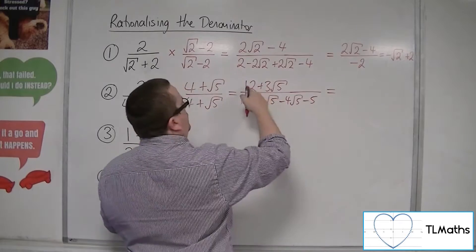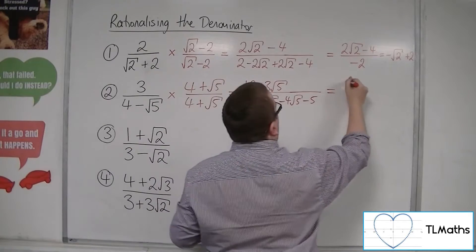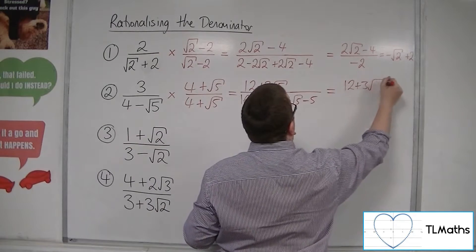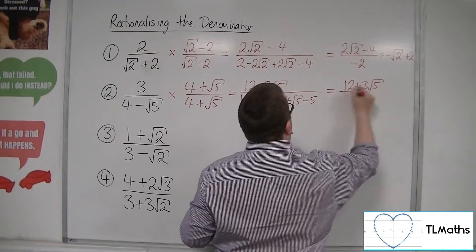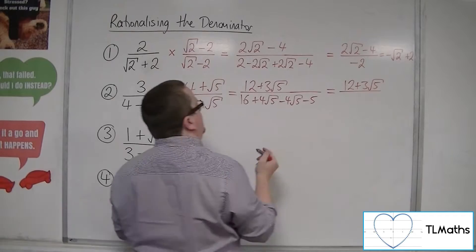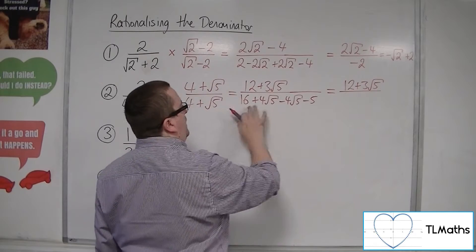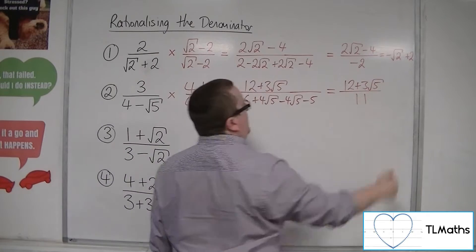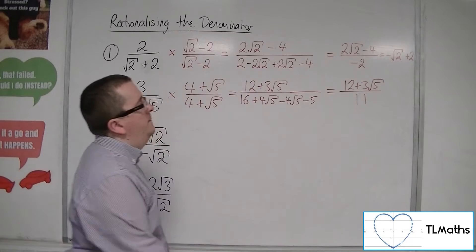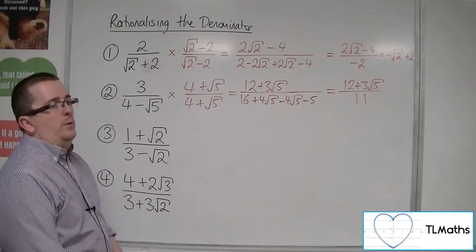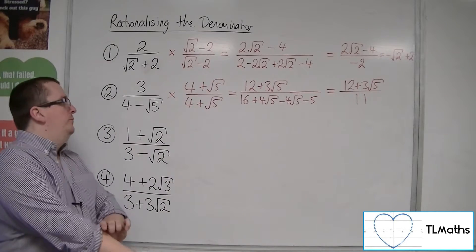And minus root 5 times root 5 is minus 5. So we've got 12 plus 3 root 5 in the numerator. In the denominator, the roots cancel, and we've got 16 take away 5 is 11. And that's as far as I would write that one.